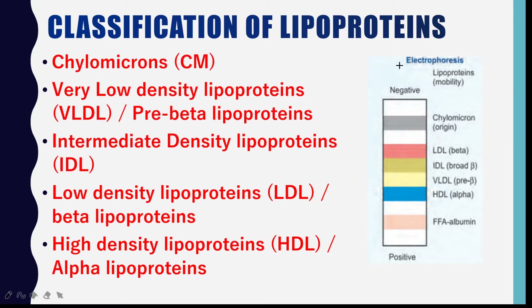Classification of lipoproteins. Lipoproteins can be classified based on their density by ultracentrifugation or based on separation by electrophoretic mobility. Based on these criteria, lipoproteins are classified as: chylomicrons, which have the lowest density and separate as the top layer; very low density lipoproteins (VLDL), also called pre-beta lipoproteins; intermediate density lipoprotein (IDL), also called broad beta lipoprotein; low density lipoprotein (LDL) or beta lipoproteins; and high density lipoproteins (HDL) or alpha lipoproteins.